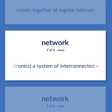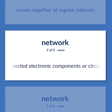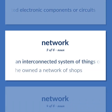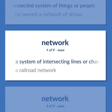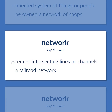Electronics: a system of interconnected electronic components or circuits. An interconnected system of things or people. He owned a network of shops. A system of intersecting lines or channels. A railroad network.